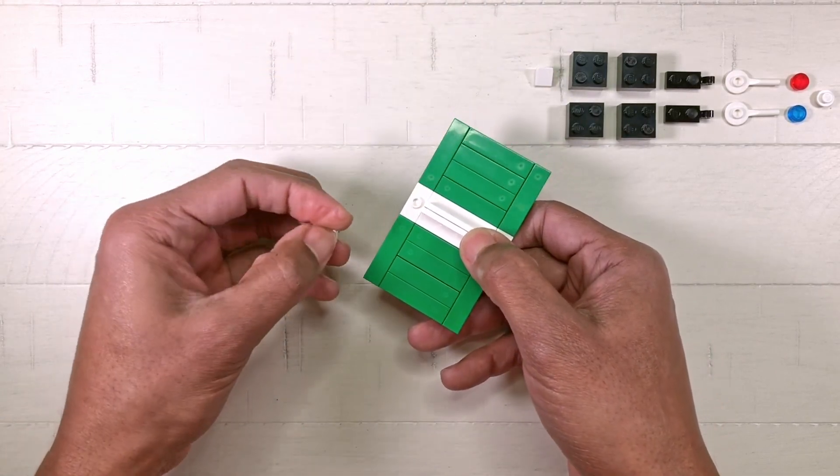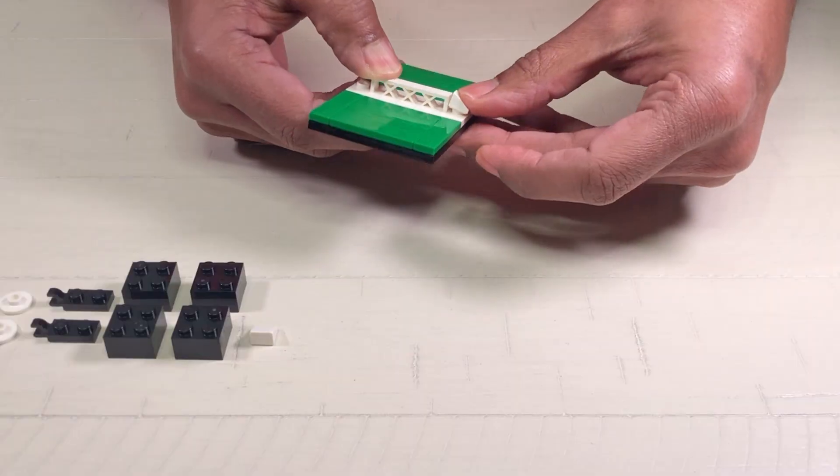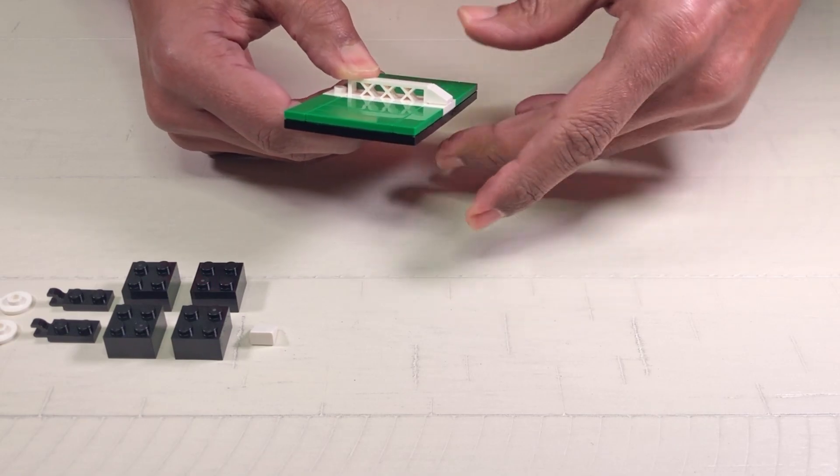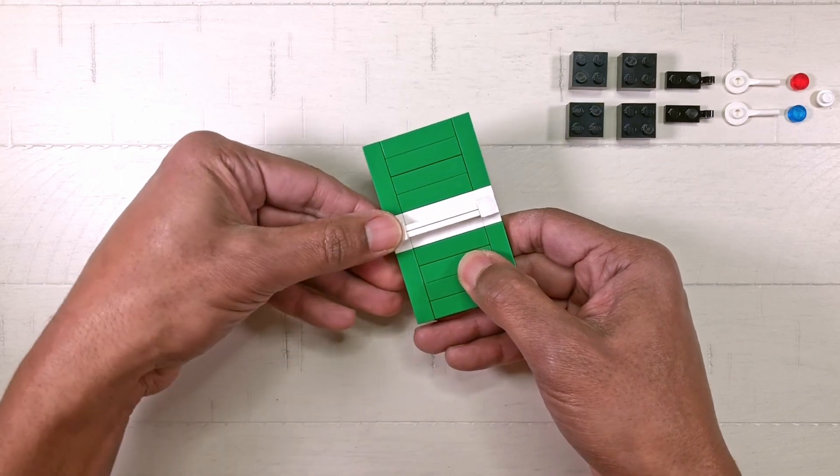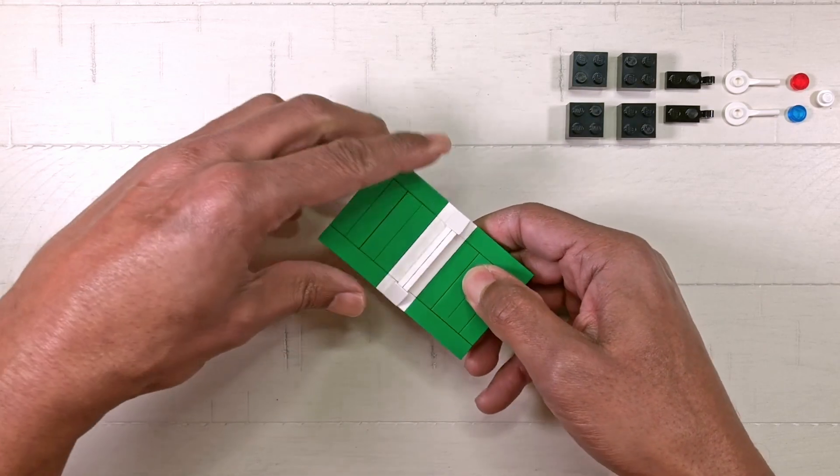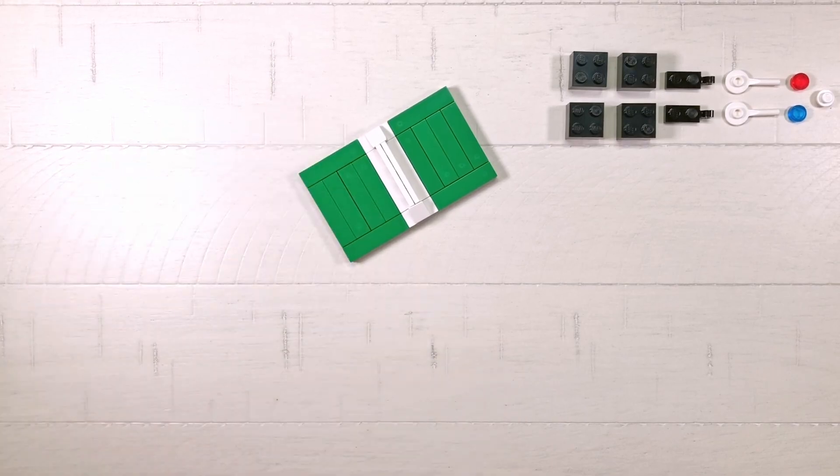Finish the net by placing each of the 1 by 1 30 degree slope on top of the 1 by 2 top studded plates. That completes the top of the table.